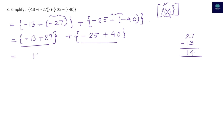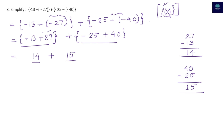Solving each curly bracket: -13 + 27 → subtract 13 from 27, giving +14 (27 is bigger and positive). -25 + 40 → subtract 25 from 40, giving +15 (40 is bigger and positive). Now add 14 + 15 = 29. The simplified form of the expression is 29.